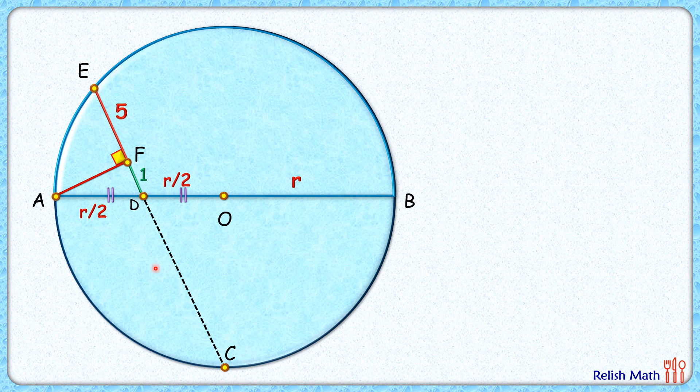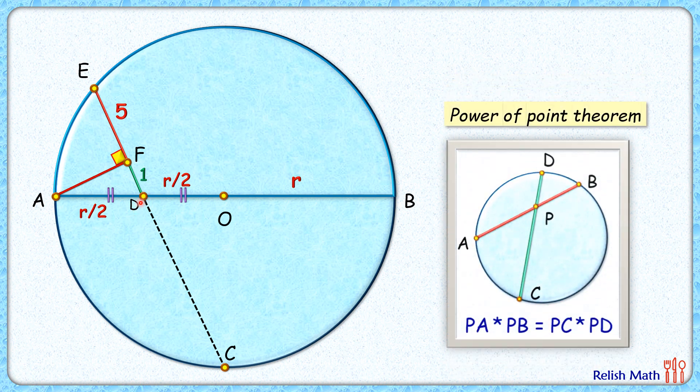So applying the power of point theorem, which states that two chords in a circle that cut each other have equal products of their lengths. So here the product of the lengths AD times DB will be equal to CD times DE.